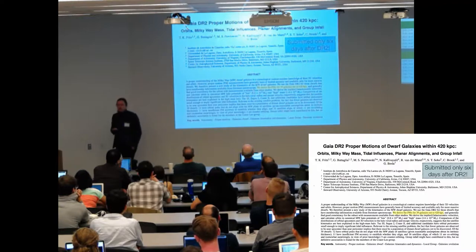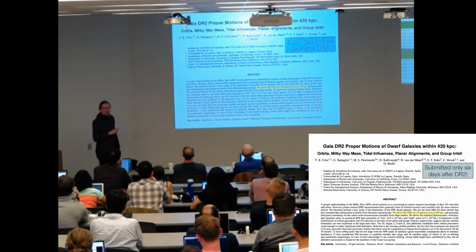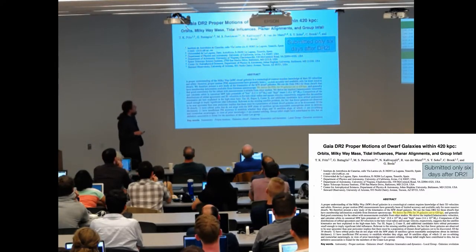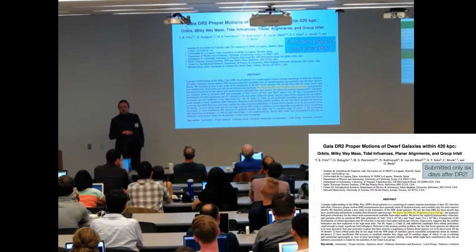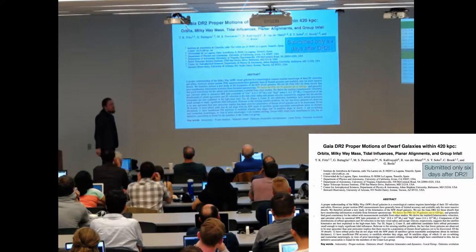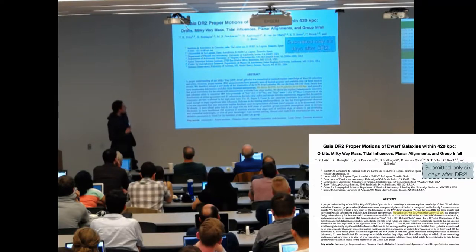Just after the Gaia data release two, ironically the HST proper motion collaboration jumped at Gaia data and within six days we put out this paper looking at the proper motions of almost 40 satellite galaxies around the Milky Way, looking at proper motions of typical member stars.